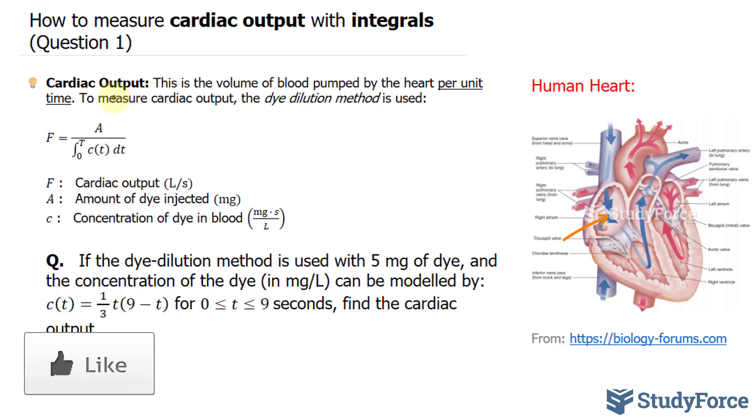The formula we use is shown below, where cardiac output is equal to the amount of dye injected, and this is in milligrams, over the integral of the function c(t), which represents the concentration of dye with respect to time.